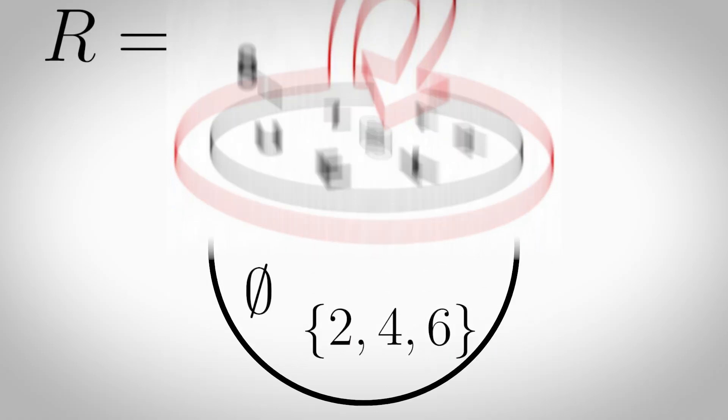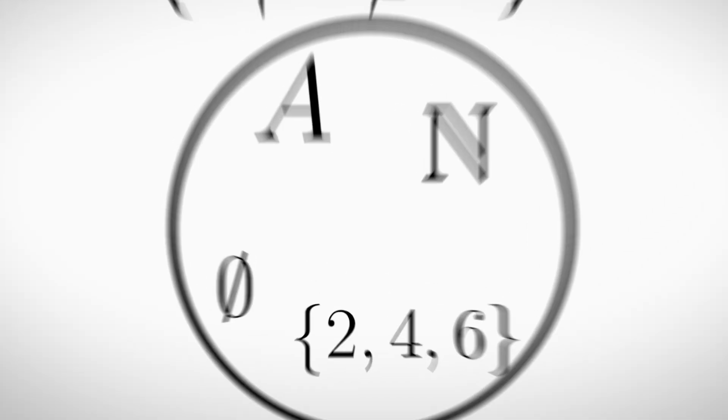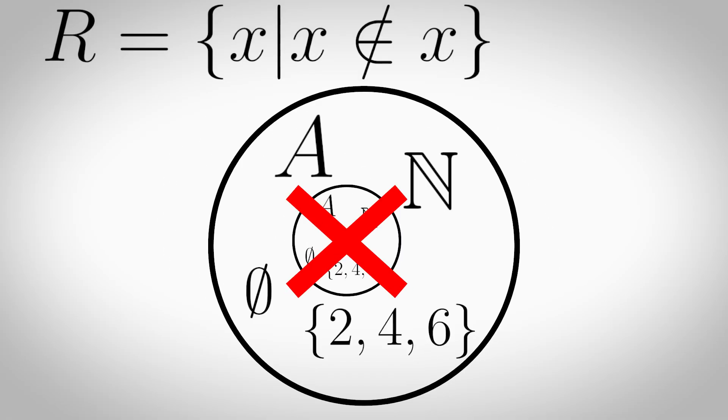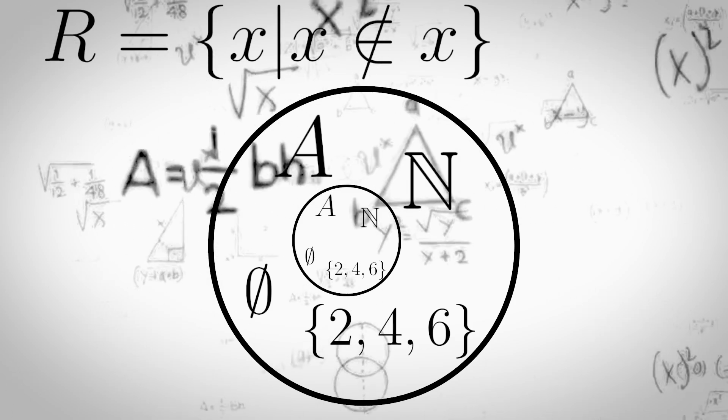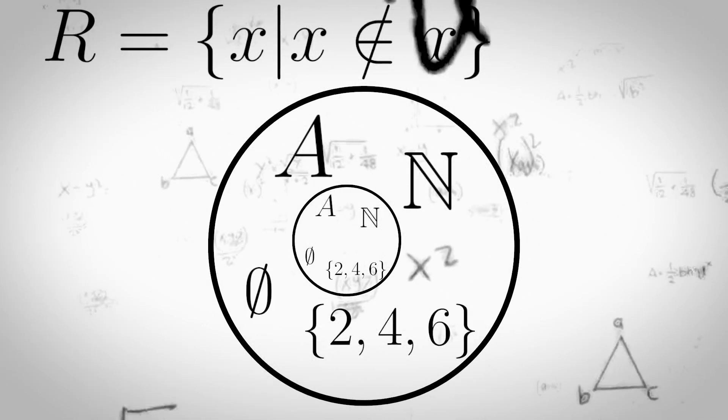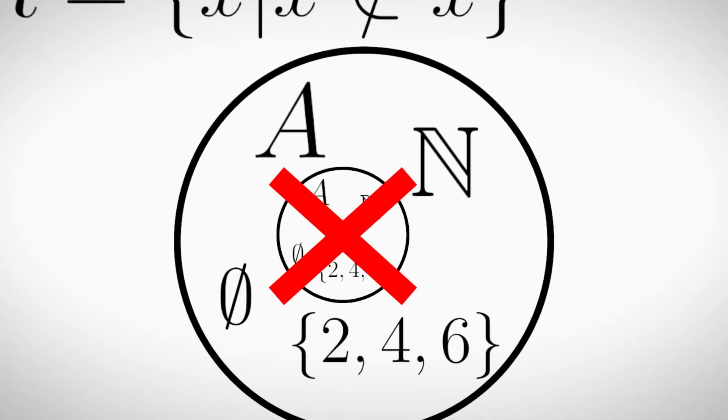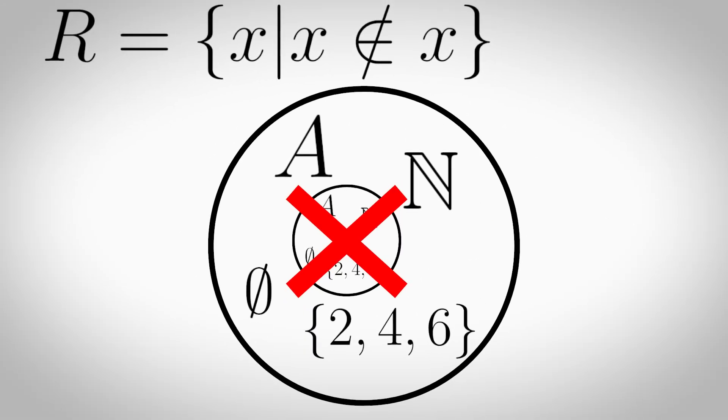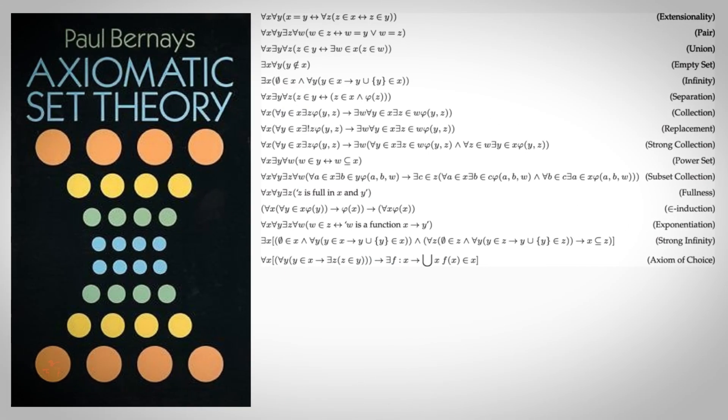Take for example the set of all sets which don't contain themselves. Does this set contain itself? If it doesn't, then it's part of the set of all sets which don't contain themselves, so it should contain itself, but if it contains itself, then it's not a set which doesn't contain itself. So to fix this, mathematicians developed axiomatic set theory.